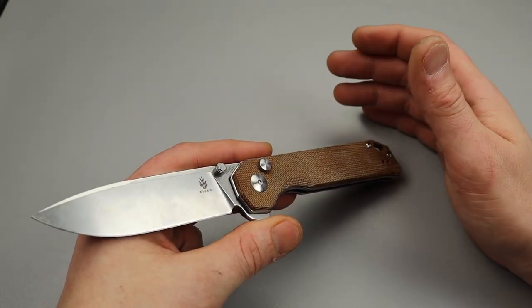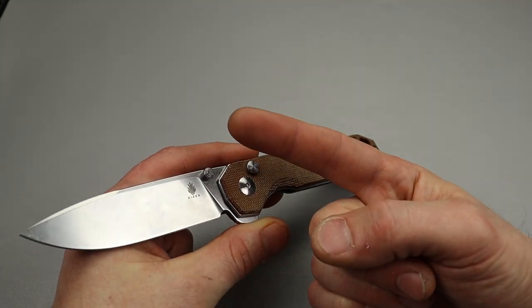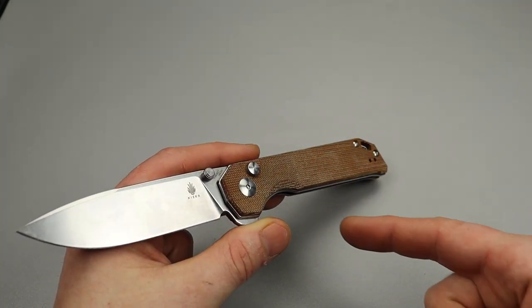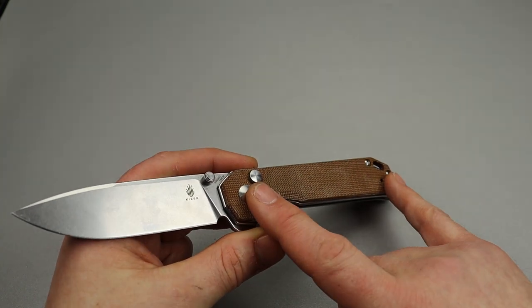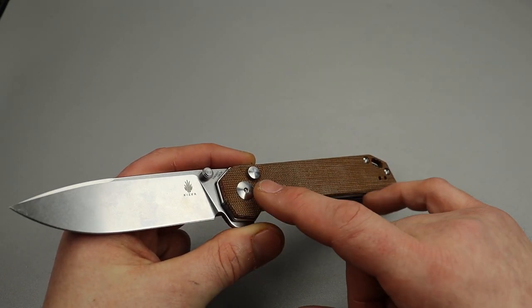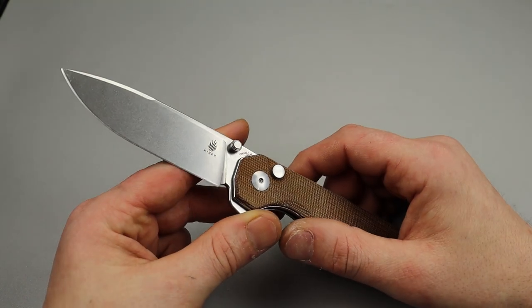So that's all you got to do. Make sure you use blue Loctite medium hold and you have a T8 bit with a driver, and you can do this right at home. You don't have to take it all the way apart. All you have to do is take out the screws and then put them in very slowly one at a time, and that should fix your issue.